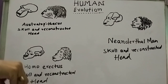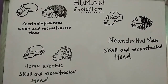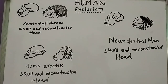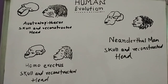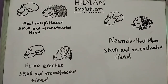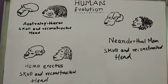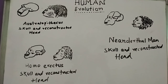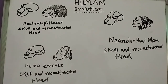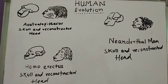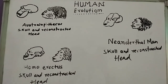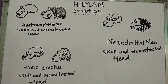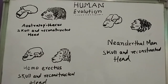The first one is Australopithecus. Here you can see I wrote skull and reconstructed head. There are a few characteristic features to note down and study. Not all are required, but we need to study the characteristic features — how they developed and how they evolved to the next level. In Australopithecus, as you can see in the picture, development starts with cranial capacity.